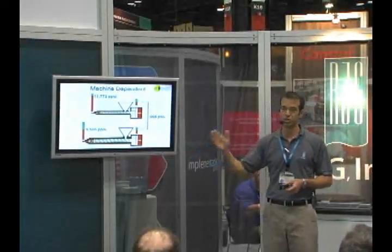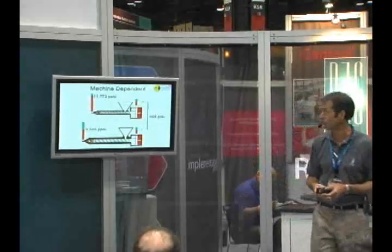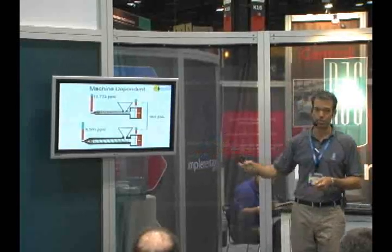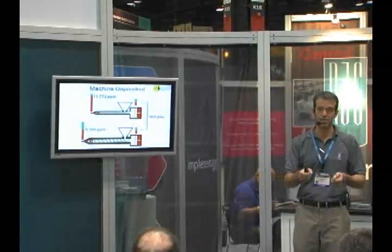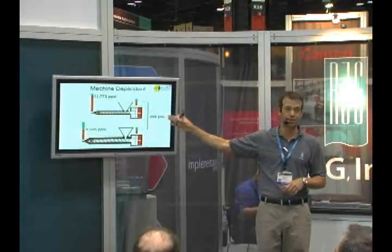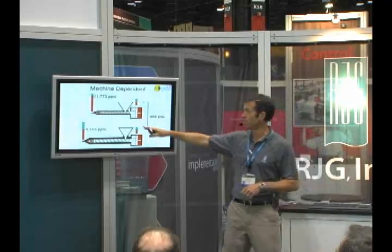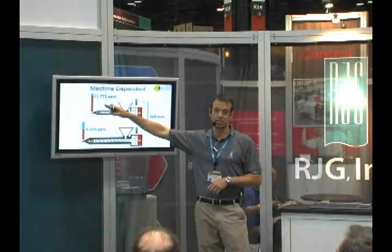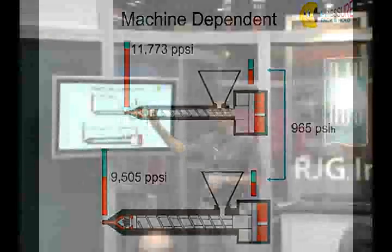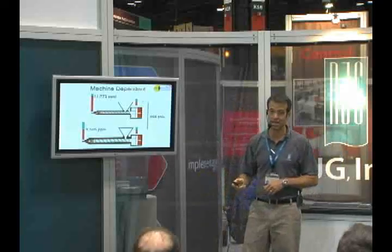However, the pressure that the plastic is seeing based on that intensification ratio is significantly higher than that. When we take our process or machine-dependent value of 965 and plug that into machine B with a smaller screw diameter, suddenly we're generating significantly higher pressure inside the cavity of the mold. Same machine setting, different screw size, and we've got different plastic conditions.